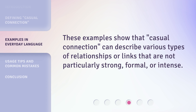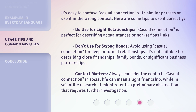These examples show that casual connection can describe various types of relationships or links that are not particularly strong, formal, or intense. It's easy to confuse casual connection with similar phrases or use it in the wrong context. Here are some tips to use it correctly. Do use for light relationships — casual connection is perfect for describing acquaintances or non-serious links. Don't use for strong bonds — avoid using casual connection for deep or formal relationships; it's not suitable for close friendships, family bonds, or significant business partnerships. Context matters: casual connection in social life can mean a light friendship, while in scientific research it might refer to a preliminary observation that requires further investigation.